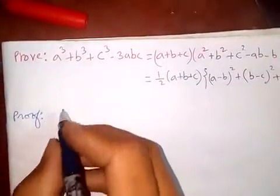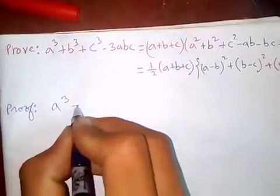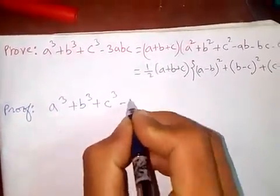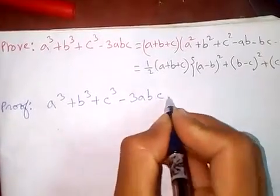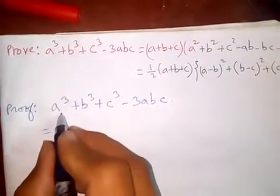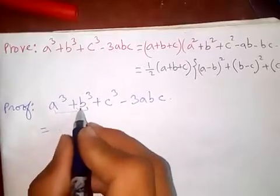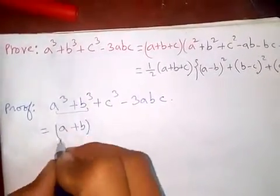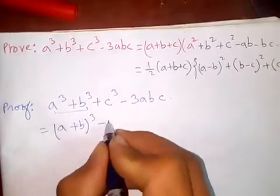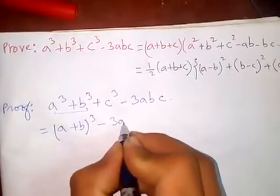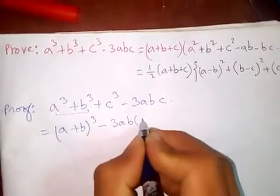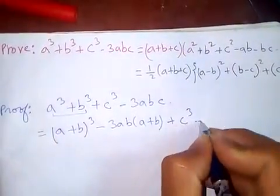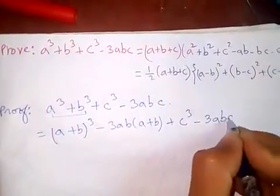To prove a³ + b³ + c³ - 3abc, let's apply the a³ + b³ formula, which is (a + b)³ - 3ab(a + b), plus c³ minus 3abc.